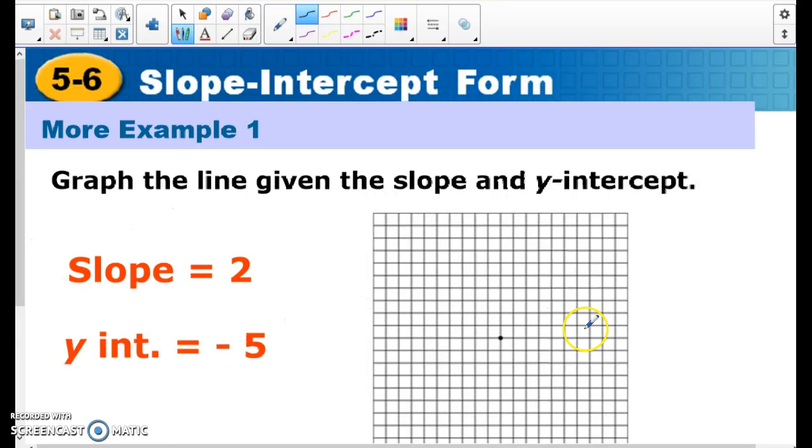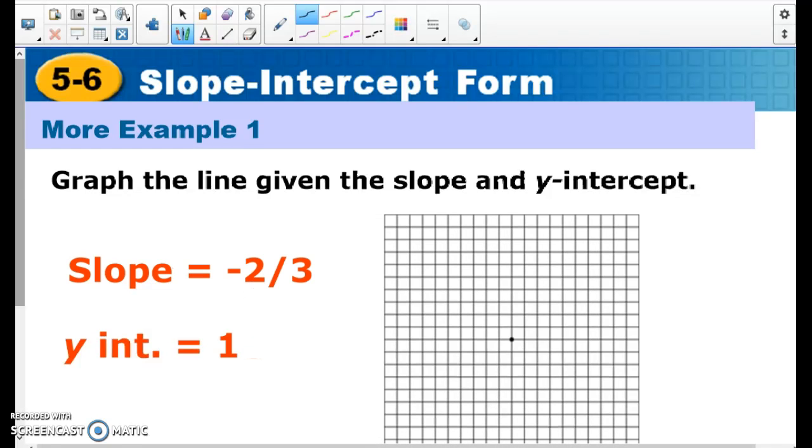So this one has a y-intercept of negative 5. So down 5. So 1, 2, 3, 4, 5. And again, my slope is 2, which means it's going to be 2 over 1. So up 2 and right 1. Up 2, right 1. Up 2, right 1. Some of you math lab kids, I know Ms. Lindbergh did this already. So you might already know how to do this. This is what it's going to look like. Last one we'll do like this.